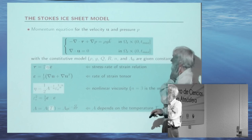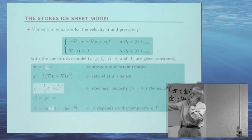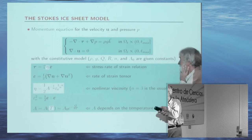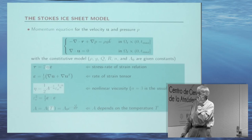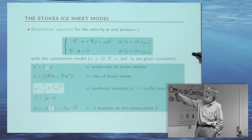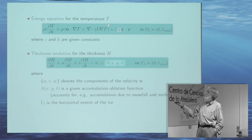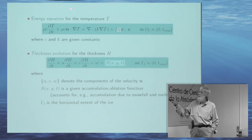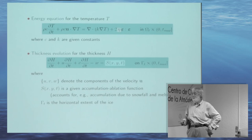The Stokes model: the divergence of the stress plus the gradient of the pressure equals the gravitational force, and you get incompressibility. The stress is proportional to strain, but this viscosity coefficient is heavily dependent on the strain — specifically the element-wise product of the strain tensor. This coefficient also depends on temperature. The energy equation is standard except we have Joule heating due to deformation with this nonlinear viscosity. And the thickness equation is a hyperbolic conservation law with a source term because snow accumulates or things melt.